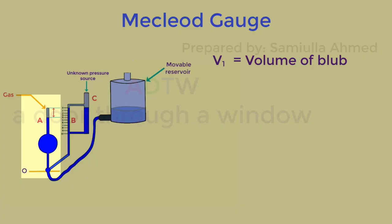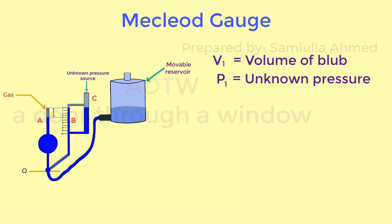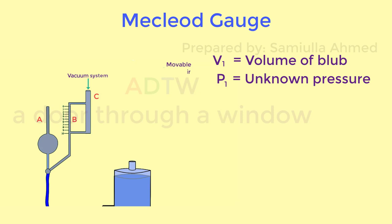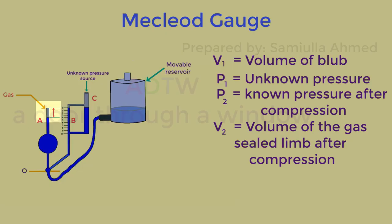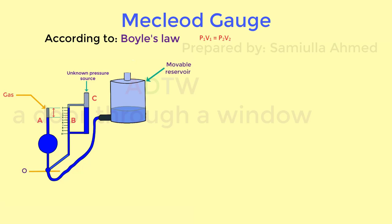Let V1 be the volume of the bulb in capillary A above the level O, and P1 be the unknown pressure of the gas in the system connected to A, B and C. Let P2 be the pressure of the gas in the limb after compression, and V2 the volume of the gas in the sealed limb after compression. Then according to Boyle's law, P1 V1 is equal to P2 V2.